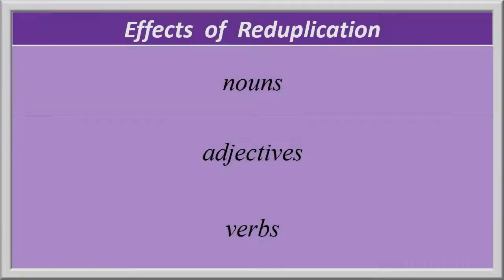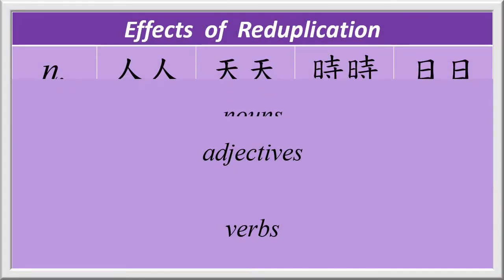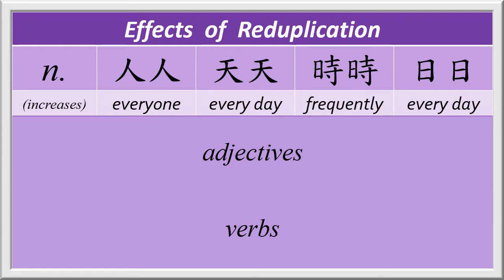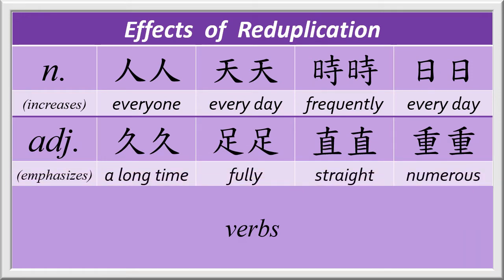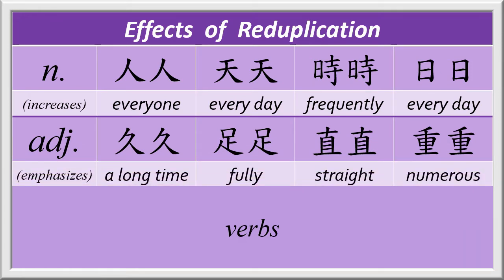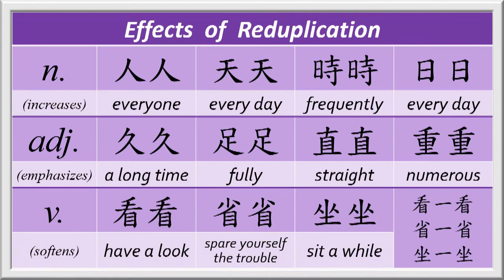We've seen reduplication several times before: with nouns in 人人, 天天, 事事, 日日; with adjectives in 举举足足, 直直, 重重; and with verbs in 看看, 省省, and 坐坐. With verbs — but not nouns or adjectives — the number one 一 can be interjected. For example: 看一看, 省一省, and 坐一坐.